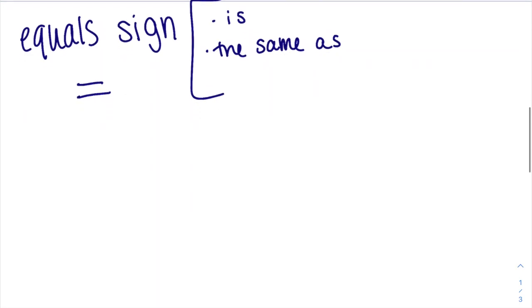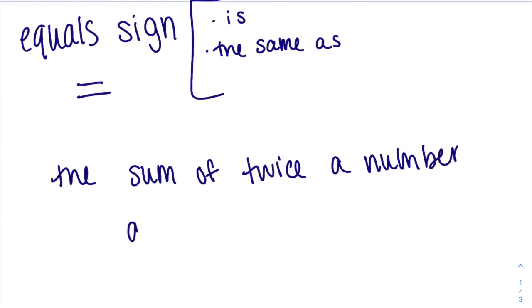The sum of twice a number and 10 is 36. I'm going to highlight some things. First, I want to look for where I see language that makes me think about operations. So it makes me think about addition, subtraction, multiplication, division.